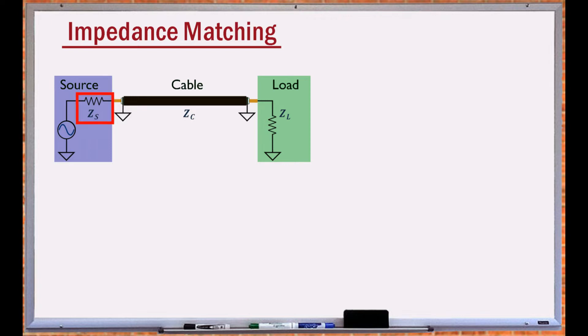In general, the source output impedance, cable characteristic impedance, and load impedance must be made equal for optimal performance.